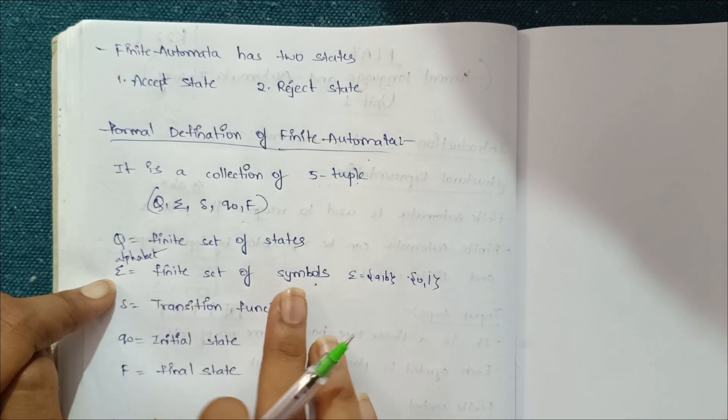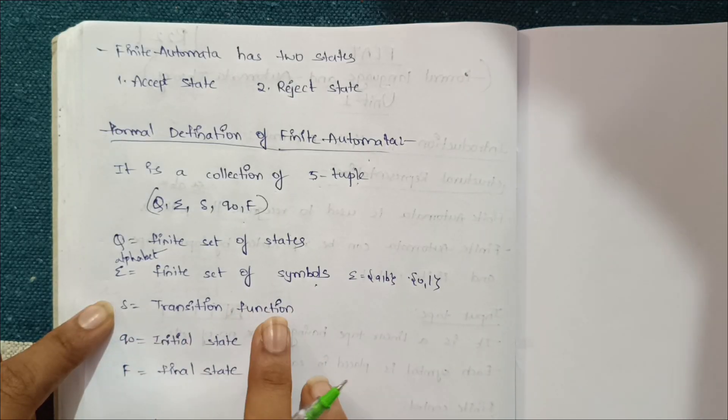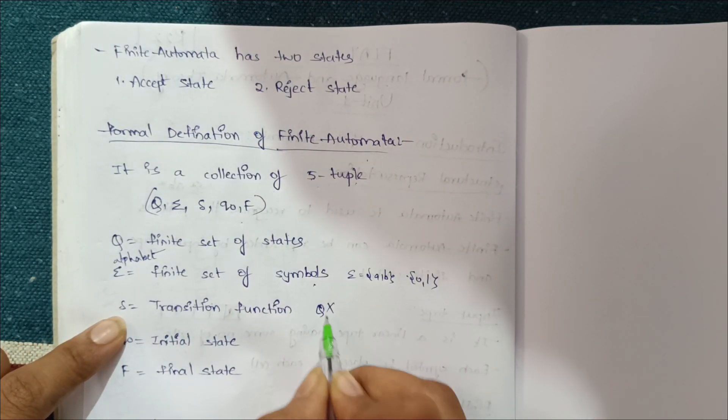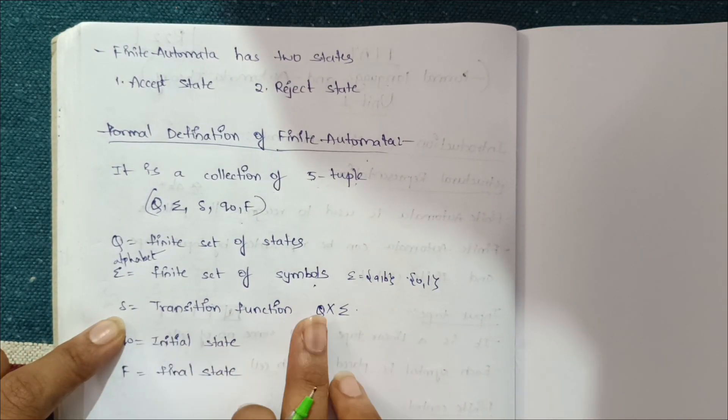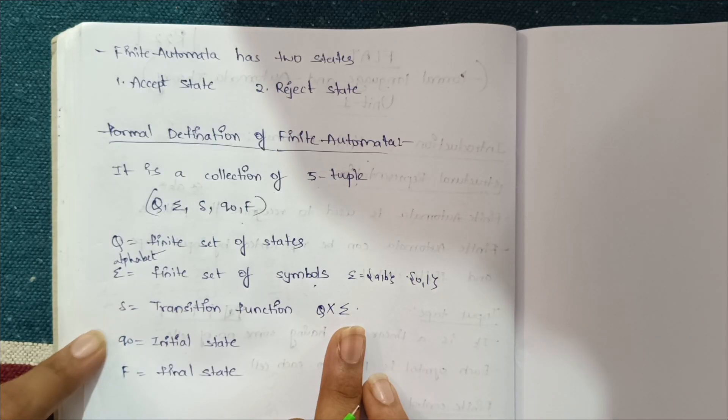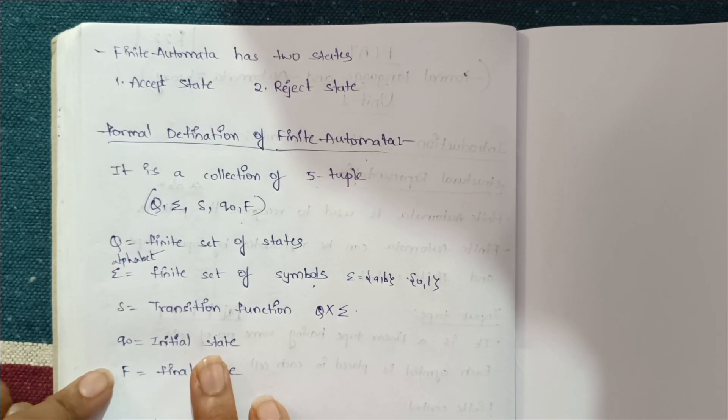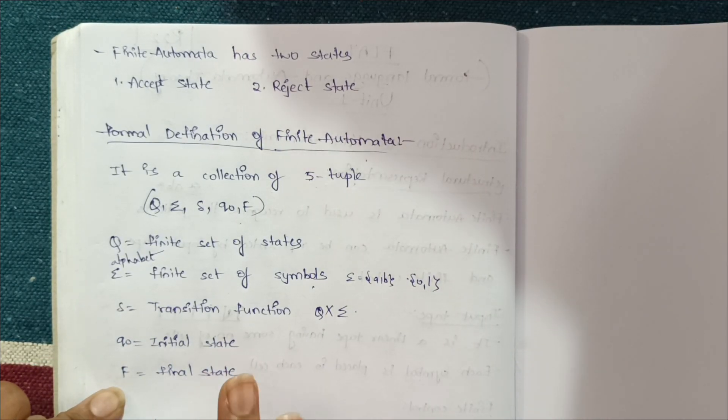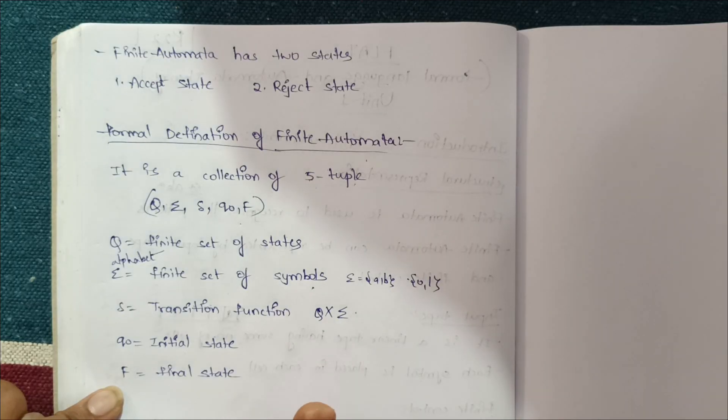This is the transition function δ from state Q into alphabet Σ. We have a transition function. q₀ is the initial state. F is the final state. This is about the structural representation of finite automata.